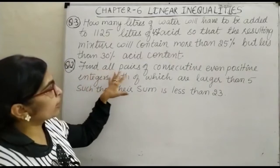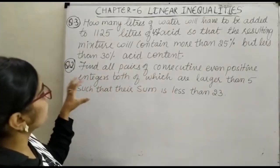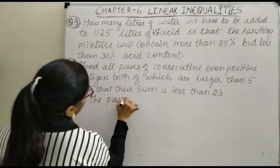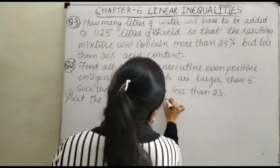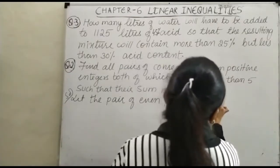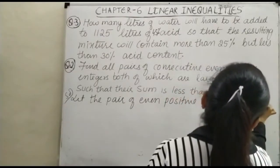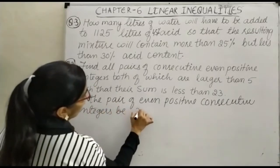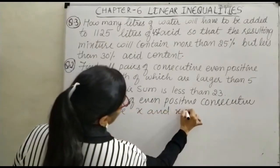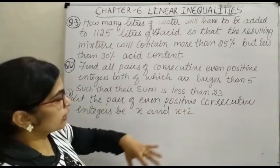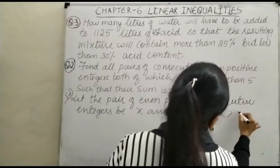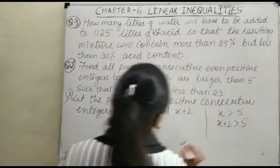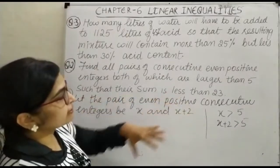Moving on to question number 2: find all pairs of consecutive even positive integers. Let the pair of consecutive even positive integers be X and X plus 2. The condition is that both are larger than 5 — so X is greater than 5 and X plus 2 is greater than 5 — such that their sum is less than 23.